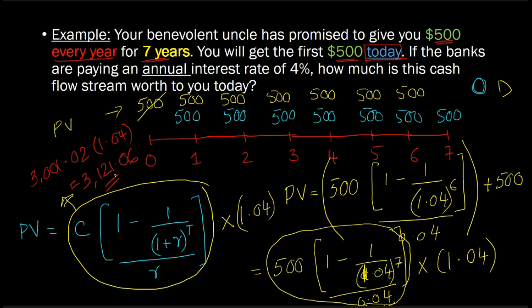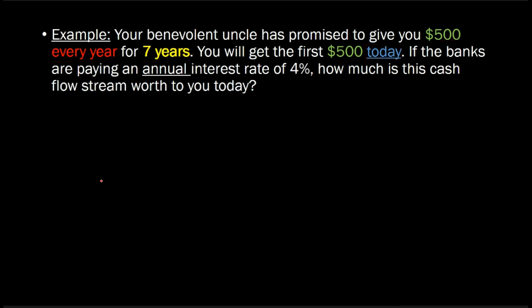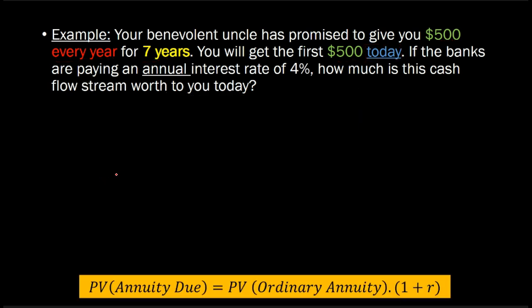So, the present value of an annuity due of 500 that you're going to get for seven years is going to be $3,121.06. In general, this is the principle. The present value of an annuity due is just take the present value of an ordinary annuity and then multiply it by 1 plus R, which is exactly what we just did.